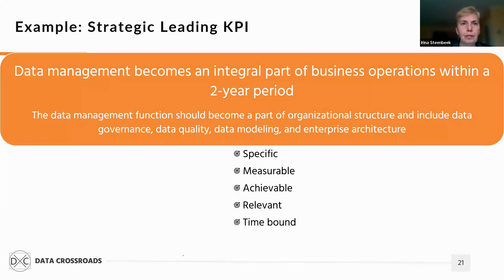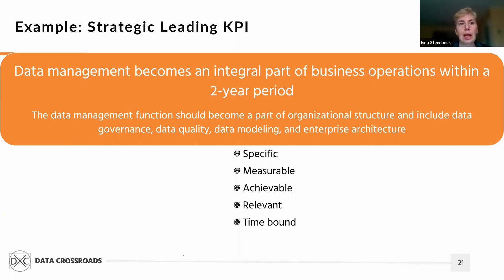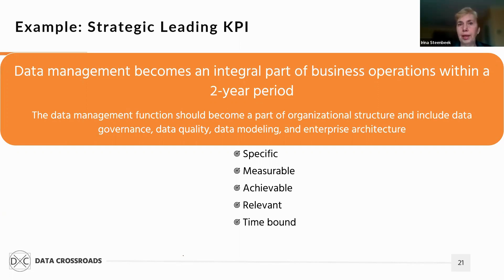So when you set up your KPI, you must check it before approving. Let me demonstrate how to do it using this example. This KPI is specific as it outlines the scope of the data management function by listing the lower-level functions and capabilities. It is measurable — if the company doesn't establish some capabilities, it will know to which degree it fails. The company should also assess in advance whether this KPI is achievable, as realizing this goal requires financial resources. The company will also assess the relevance of this KPI. Finally, it is time-bound as we defined two years as a deadline.